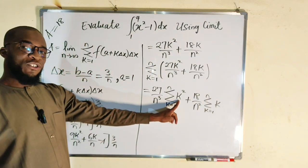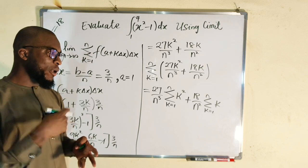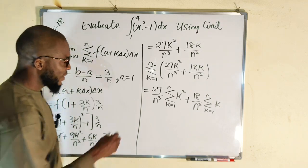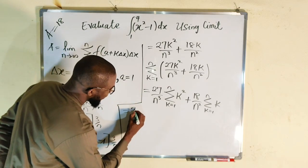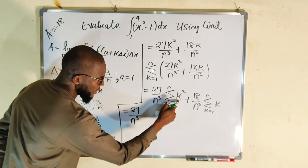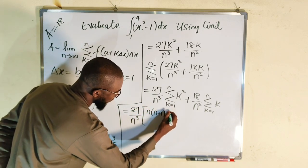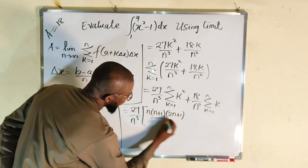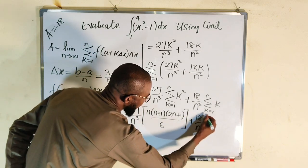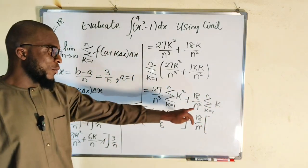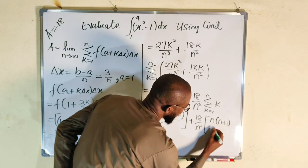We have learned that the summation of k squared from 1 to n equals n(n+1)(2n+1) divided by 6. So this becomes 27 over n to the third power times n(n+1)(2n+1) divided by 6. Plus the second term: 18 over n squared times the summation of k from 1 to n, which equals n(n+1) divided by 2.